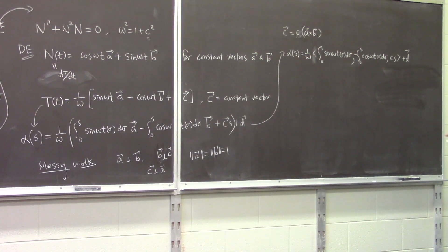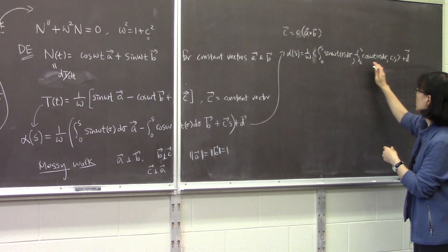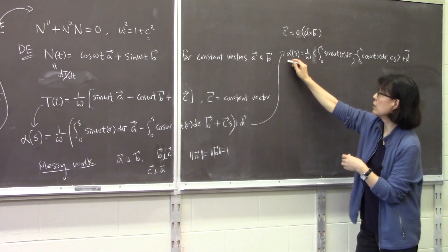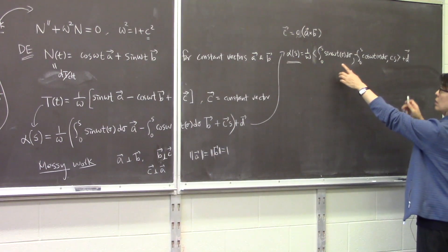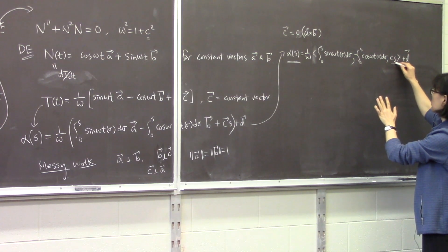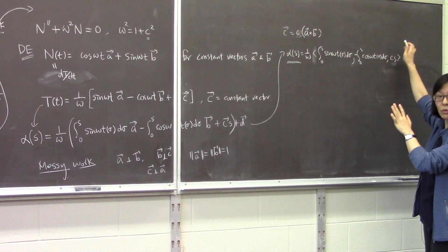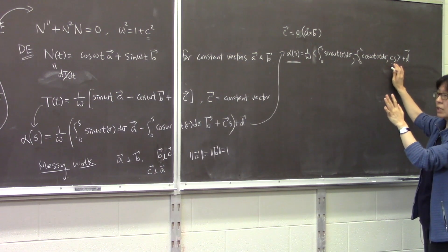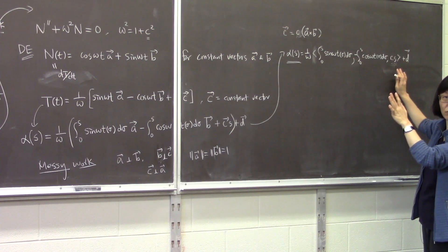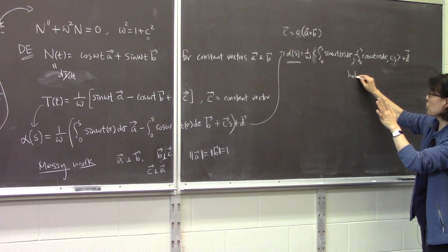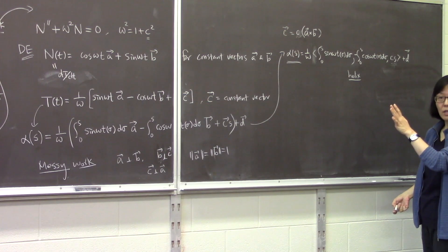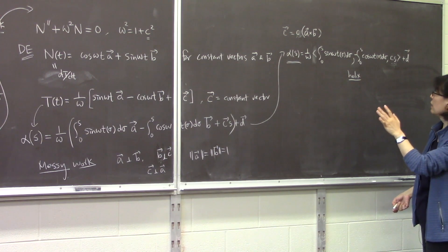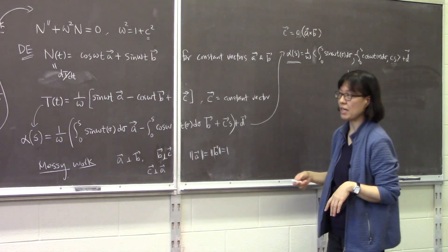This shows that alpha has a cs component along the k-direction, so it goes along that direction. This actually shows that this is a helix. That's what we found last time.